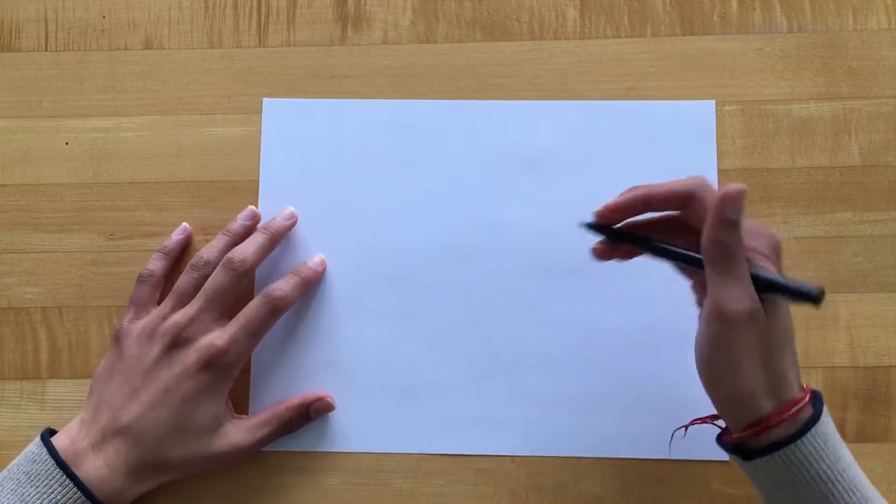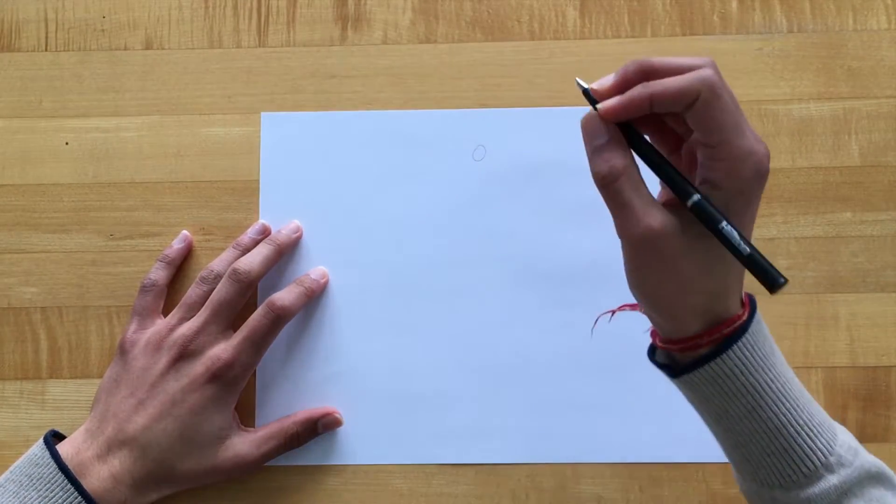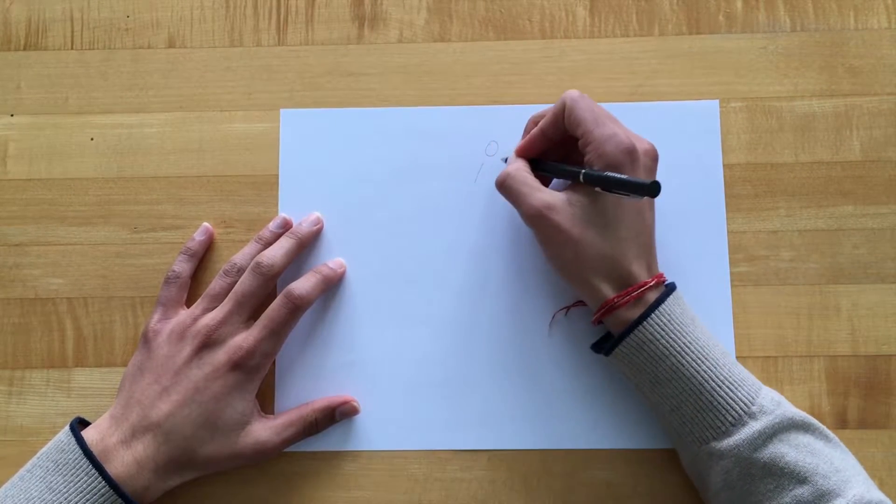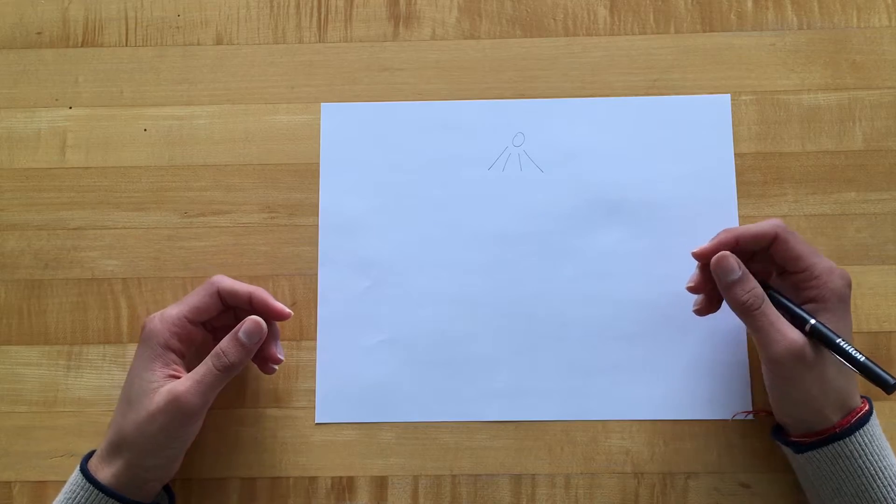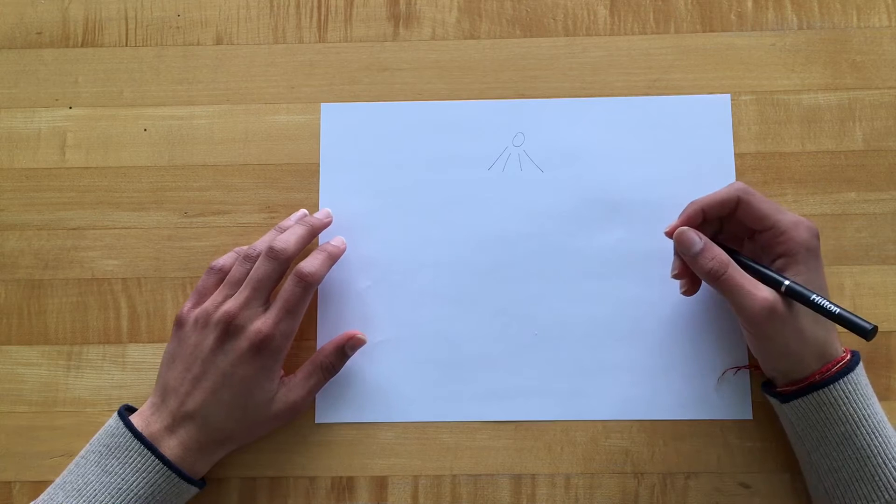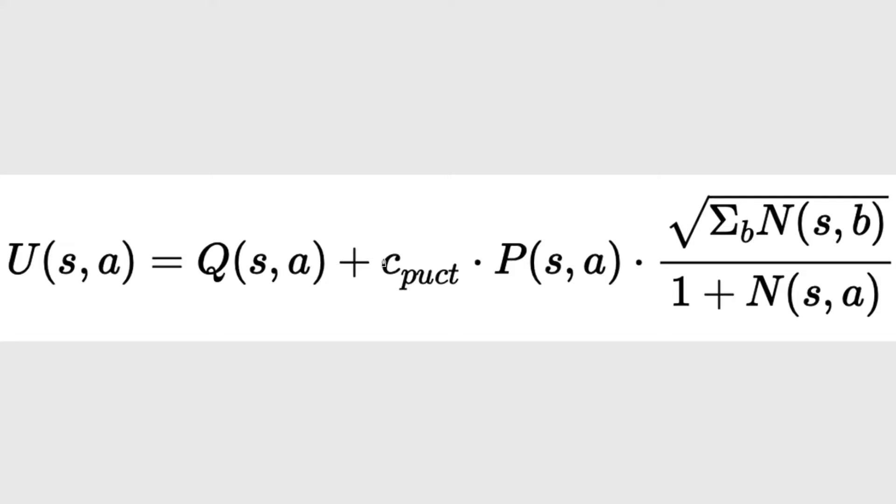Now the way this works is that it starts off at a root node, which is the current board state, and then it looks at all the possible actions it can take. Then it calculates the upper confidence bound for all of these actions. So in order to calculate the upper confidence bound, we maintain some variables for every node in the game tree. Variables like Q, P, and N.